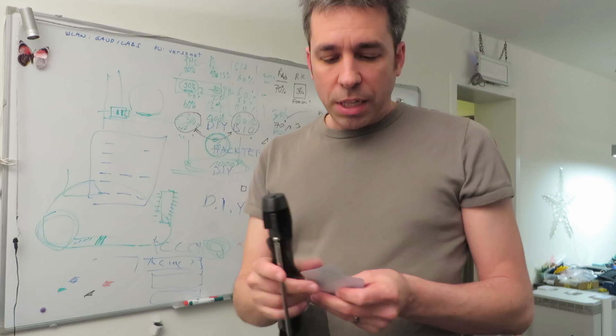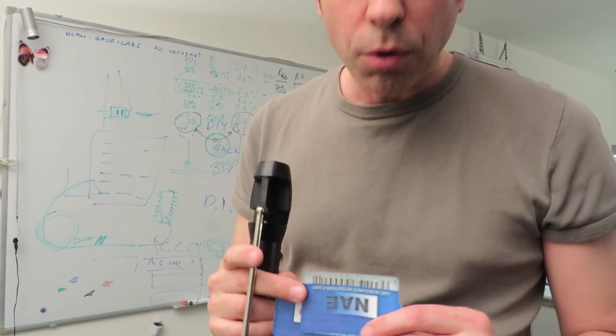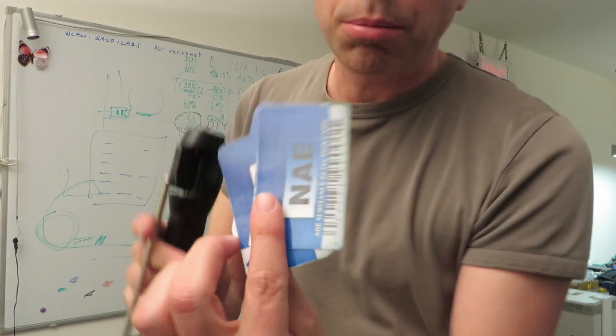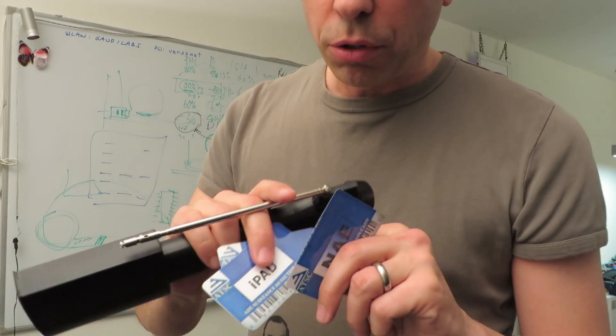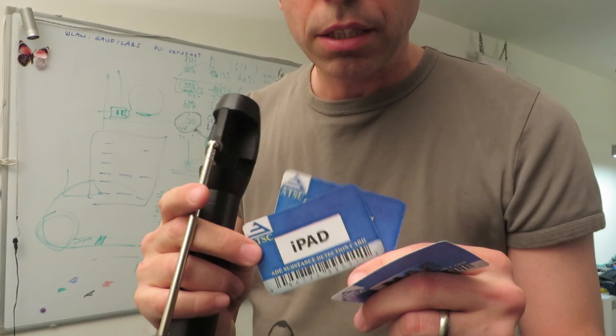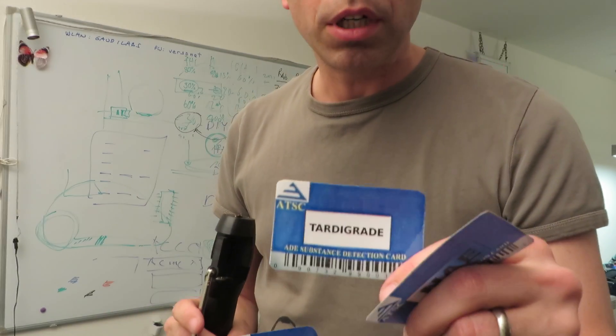So how it works, you basically have these different cards where you can put what you're looking for on the card, like explosives, or if you're looking for your iPad, or I think I will go for the tardigrade.